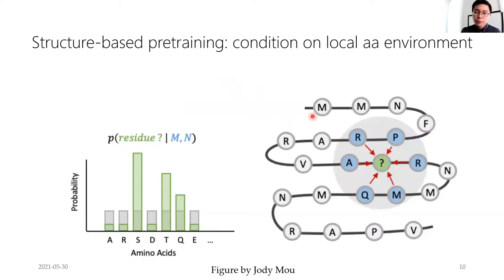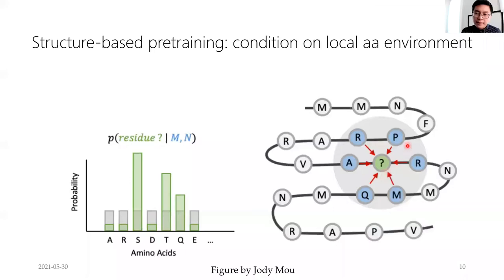The third type of pre-training is structure-based, which respects the structure of proteins. The identity of the amino acid that goes at a given position intuitively depends on its local amino acid environment. The model gets to see, for example, PRAQMR in this environment, and conditioned on the identities of those residues, predicts the probabilities of a residue in the center. That's a structure-based pre-training task.